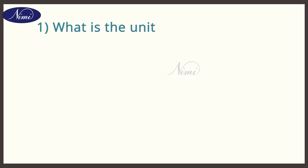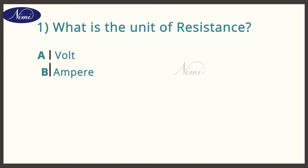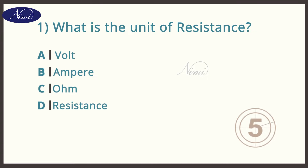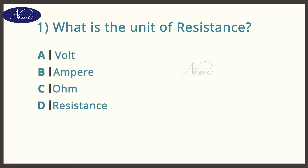Question number one: What is the unit of resistance? Option A: Volt. B: Ampere. C: Ohm. D: Resistance. And the answer is C — Ohm.